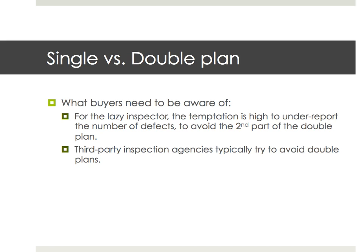What's the conclusion for buyers? Be careful. With double plans, there's a big temptation for a lazy inspector to just under-report the number of defects and say the batch is good, so they don't need to go for the second sampling and second part of the inspection. Also, it's hard to predict in advance the amount of work. That's why third-party inspection agencies usually try to avoid anything other than a single sampling plan.